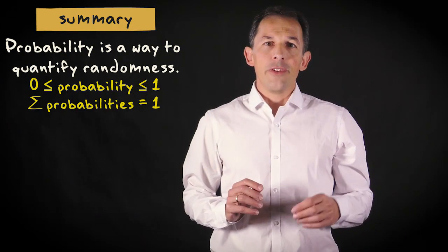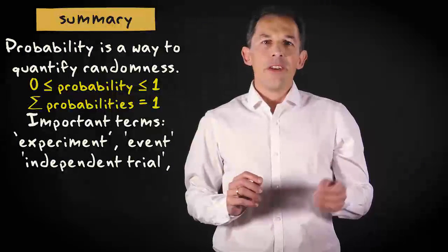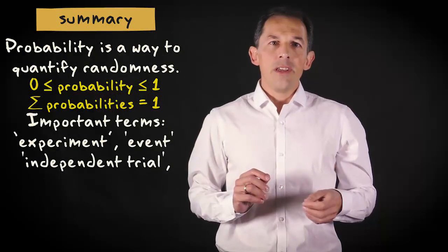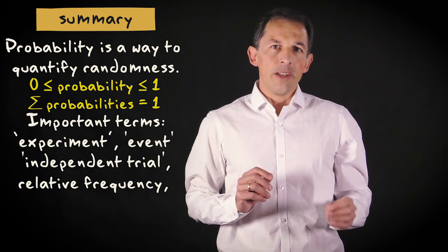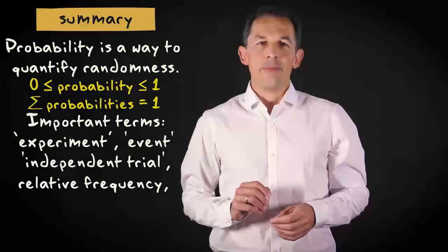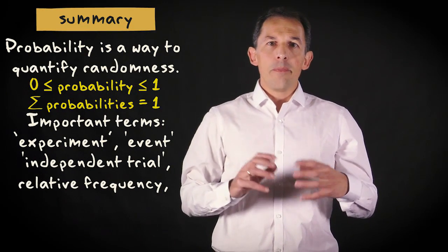A formal definition makes use of the concept of experiment, event and independent trial. The probability of a certain event is calculated by the relative frequency of that event occurring in an experiment. The experiment consists of independent trials which are repeated many times.